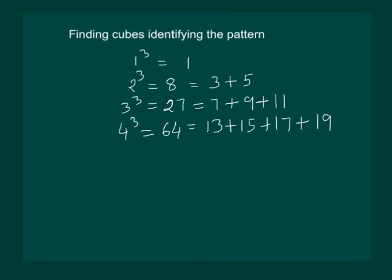Let us observe whether these numbers are following any pattern. Clearly, 1 cube had only 1 number. 2 cube had 2 numbers in the sum. 3 cube had 3 numbers and 4 cube had 4 numbers. And all the numbers are odd.